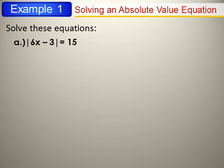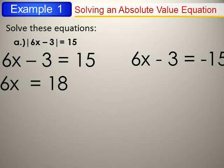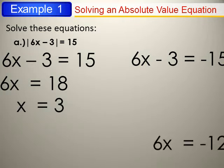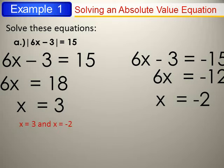If |6x − 3| = 15, that means inside the absolute may be 15 or negative 15. So 6x − 3 = 15 or 6x − 3 = −15. First equation: 6x = 18, so x = 3. Second: 6x = −12, so x = −2. Substitute to verify. The solution set equals {3, −2}.